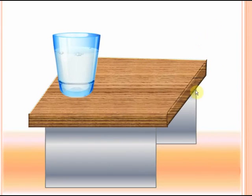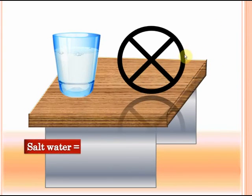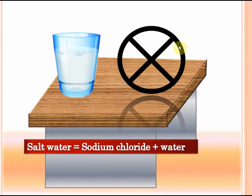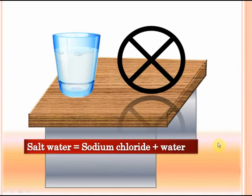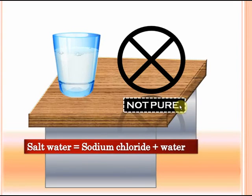Let's take another example — salt water. It's not pure, and you can easily find out why. It contains two types of particles: sodium chloride particles and water particles. But a pure substance contains only one kind of particles. So sodium chloride is pure, water is pure, but salt water is not a pure substance — it's a mixture.